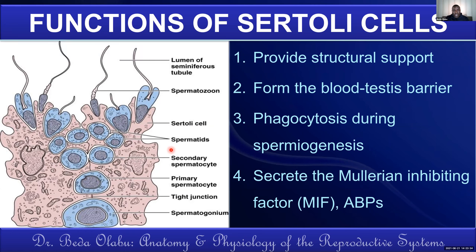By the time a baby has testes, it is committed to forming male structures, so the Müllerian duct is not needed. Apart from anti-Müllerian hormone, Sertoli cells also produce androgen-binding proteins. These proteins bind androgens in the testes, ensuring a high concentration of androgens in the testes — which is needed to support the process of spermatogenesis.